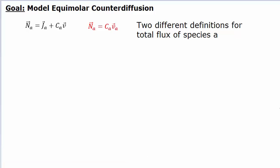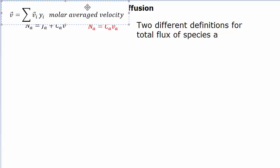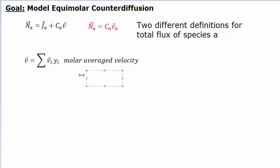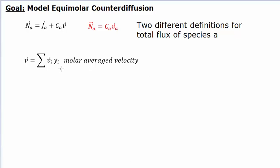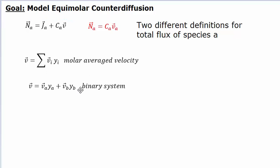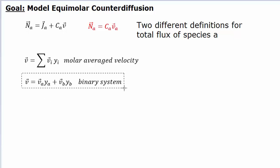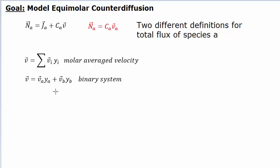Let's look a little bit at how we get here, because it is a little bit confusing. The way we define molar average velocity is you take the velocity of each of the species and you multiply them by their respective mole fractions. It's basically a velocity averaged by the mole fractions of each of the species present in the system. If we assume a binary system with just two species A and B, then that expression would simply look like this.